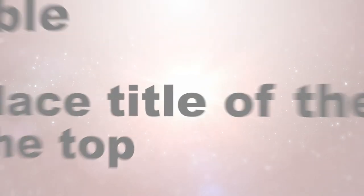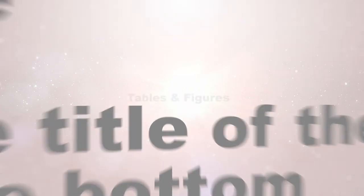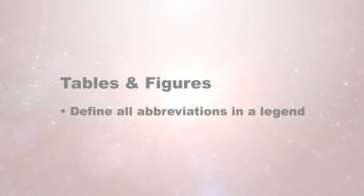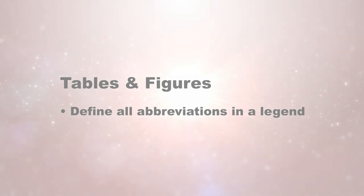For a table, always place the title at the top of the table. For a figure, always place the title at the bottom of the figure. When writing your tables and figures, if you're using abbreviations within a figure or table, it is important that you define those abbreviations in a legend or a line at the bottom of the figure or table — even if those abbreviations were already defined within the text. This helps the reader who just wants to skim your paper and look at your tables or figures and understand what they mean.